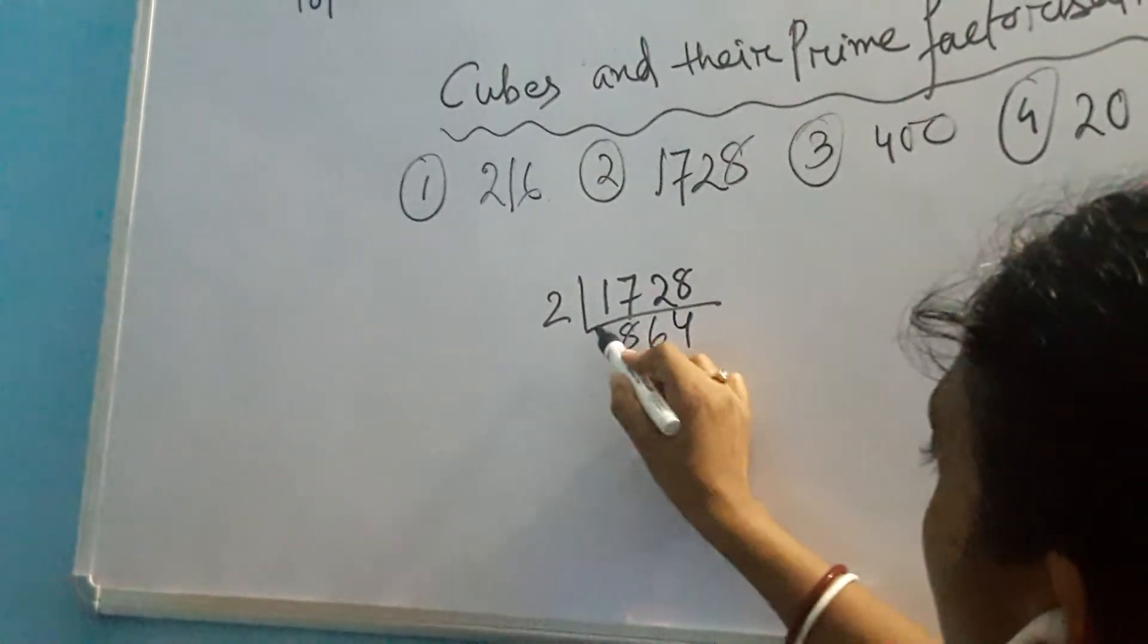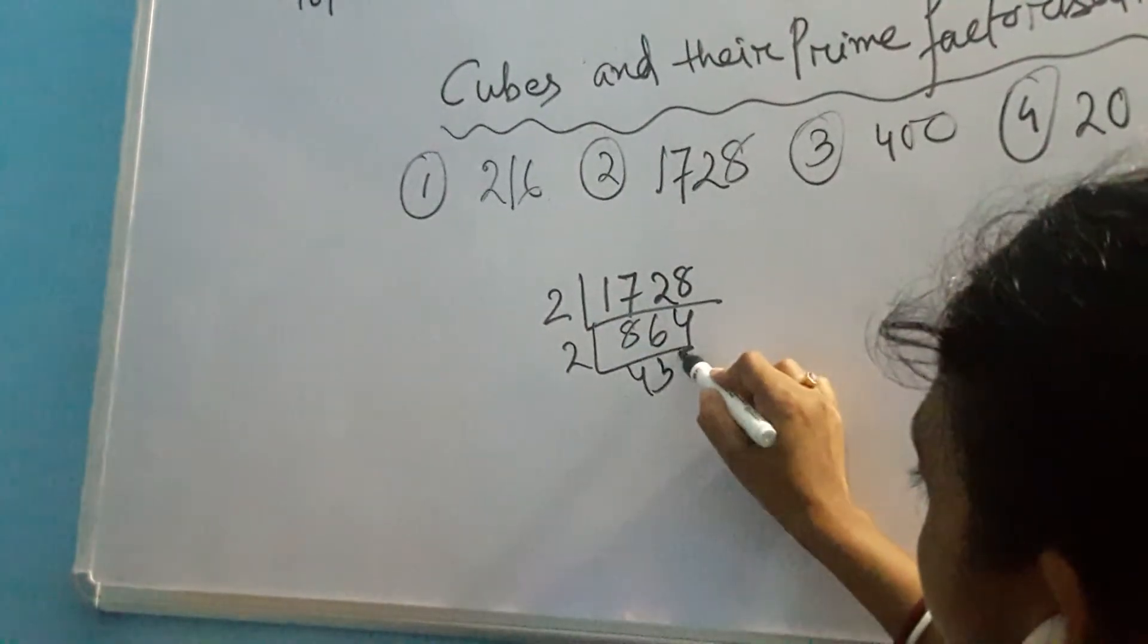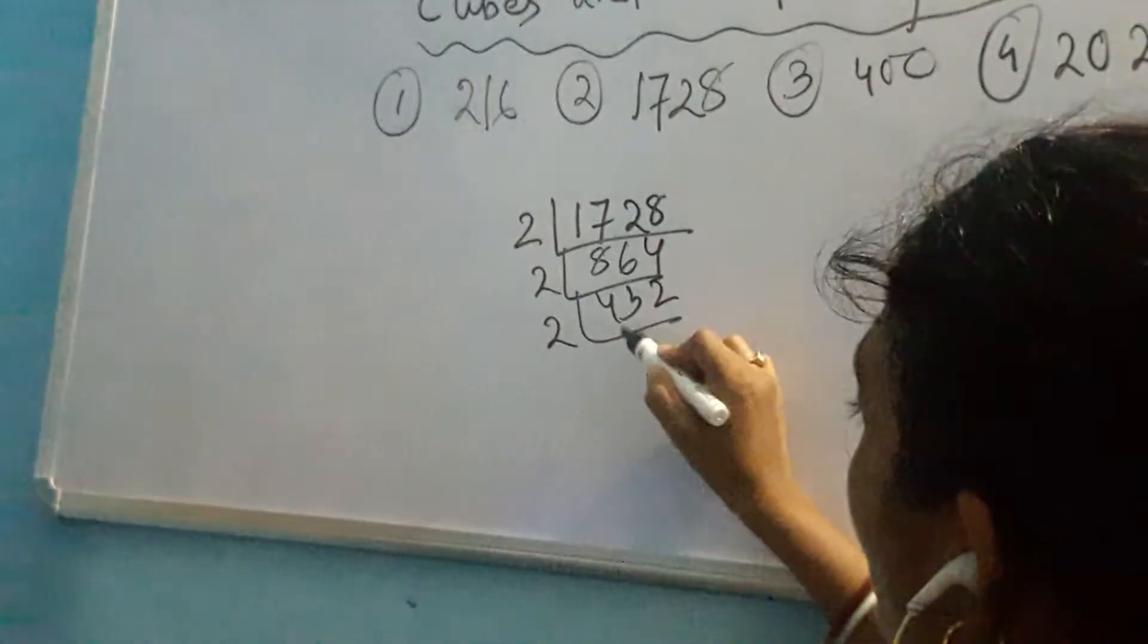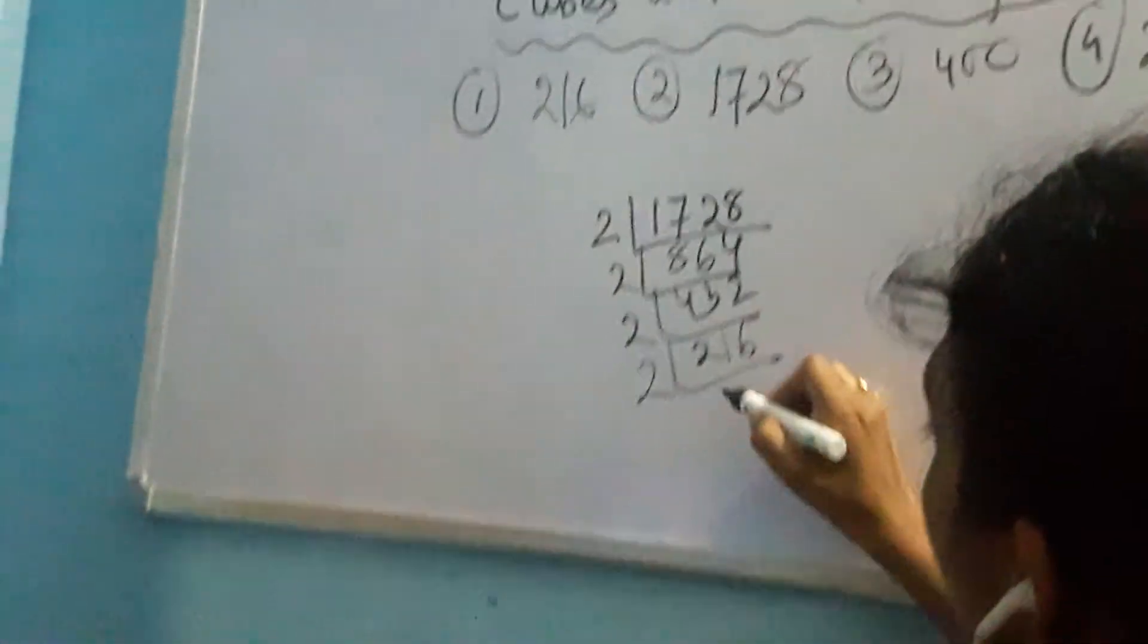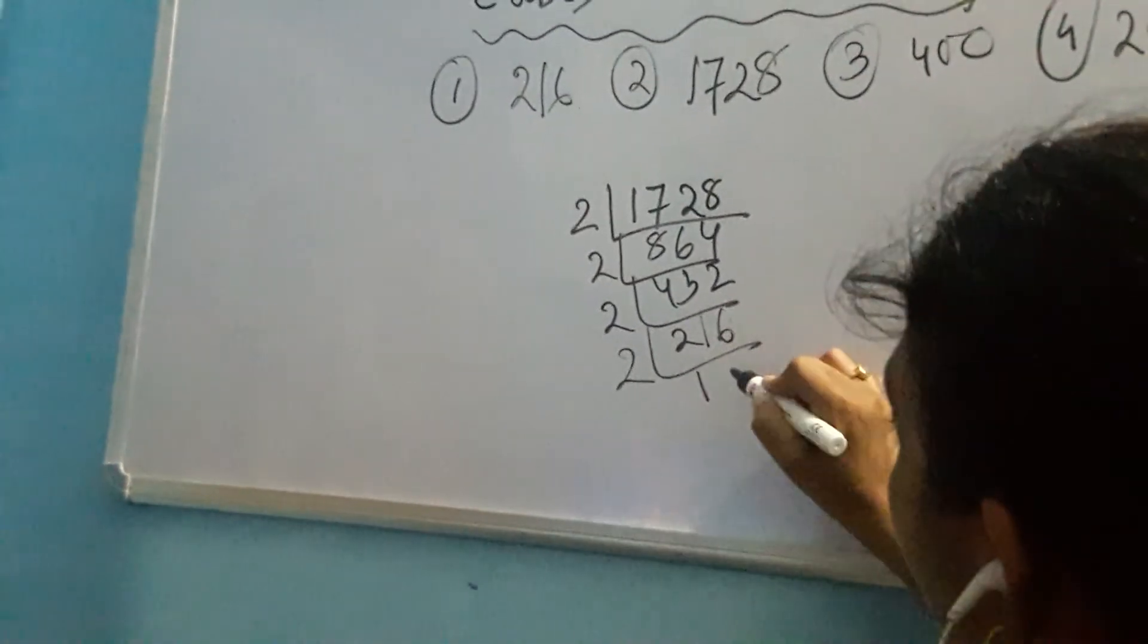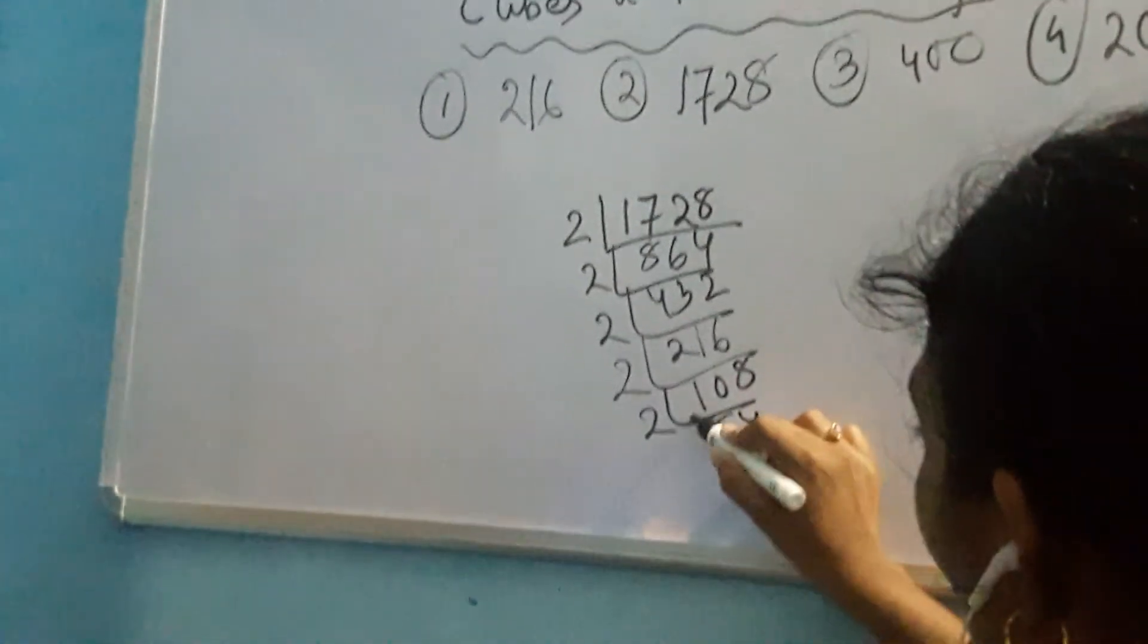2, 8 is 16. 2, 6 is 12. 2, 4 is 8. Again by 2. 2, 4 is 8. 2, 3 is 6. 2, 2 is 4. Then again by 2. 2, 2 is 4. 2, 1 is 6. 2, 2, 6 is 12. Then again 2, 1 is 2.